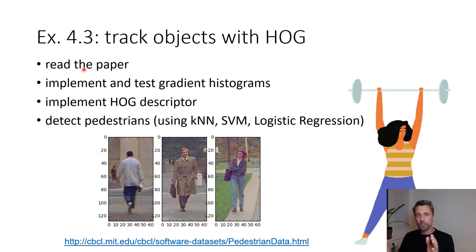Your exercise will now be to first read the paper, then implement and test the gradient histograms like discussed, and then implement the HOG descriptor. You will then try to use a very simple classifier - maybe k-NN, maybe logistic regression, or support vector machines - to detect pedestrians on a dataset that we will provide, link below.